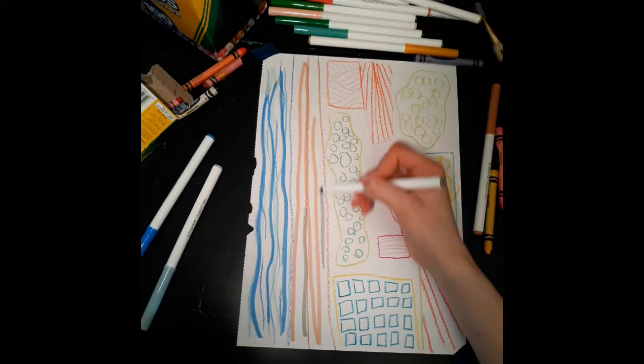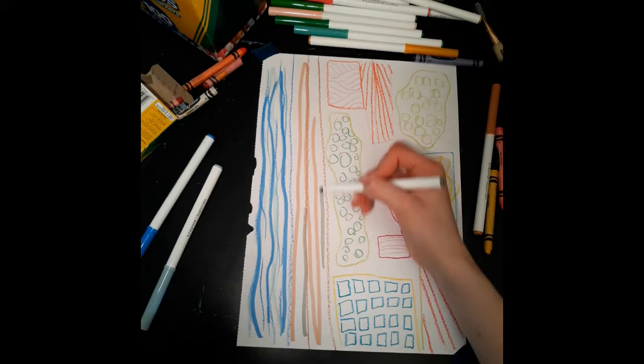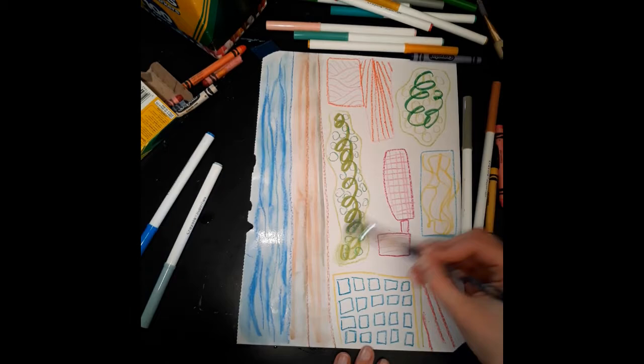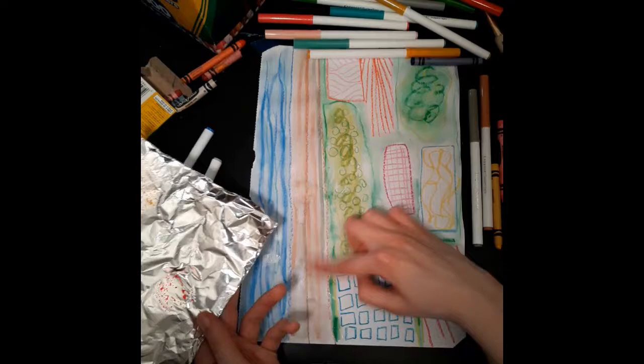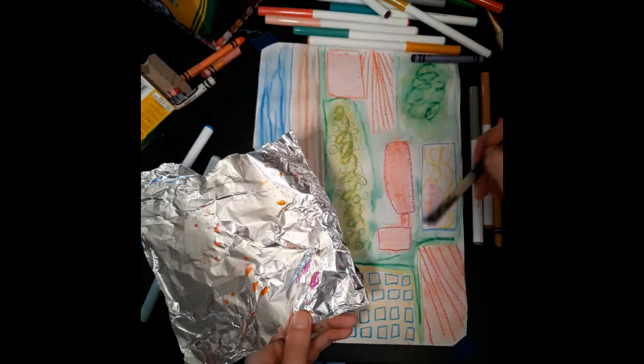I drew with crayons and now I'm adding some washable marker. A fun trick to do with washable marker is to draw and then paint over it with water. This wakes up the marker and turns it into watercolors. Holly suggested another fun way to do this, which is to draw swatches of color onto tin foil and then paint those with water to create a watercolor palette.